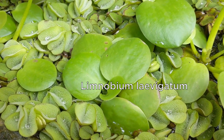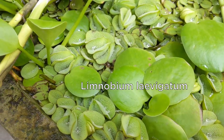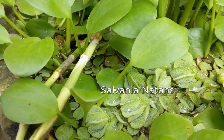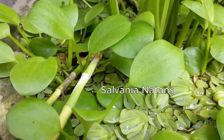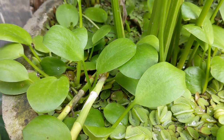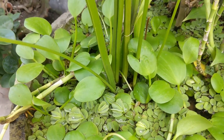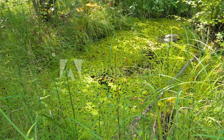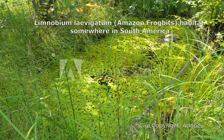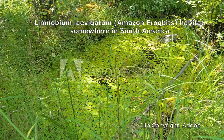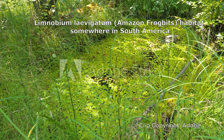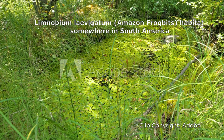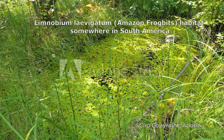Here you can see Limnobium levigatum, more popularly known as Amazon frog bits, and Salvinia natans, growing in an outdoor pond. While Salvinia natans is common in all four continents of Asia, Africa, South America, and even Europe, one can very well guess from the nickname Amazon frog bit that Limnobium levigatum is endemic to South America. It is native to the slow-flowing lakes, ponds, and rivers throughout Central and South America.